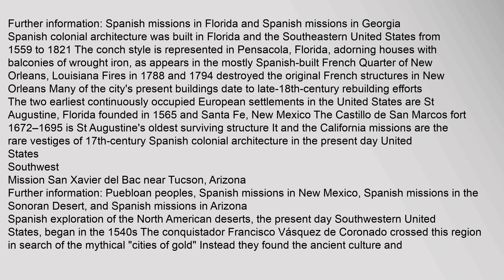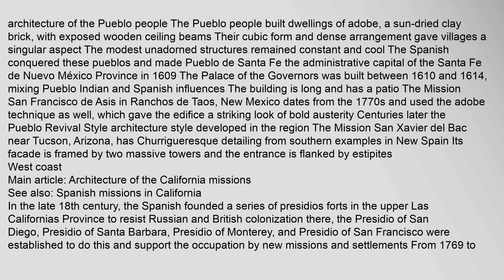Spanish exploration of the North American deserts — the present-day Southwestern United States — began in the 1540s. The conquistador Francisco Vázquez de Coronado crossed this region in search of mythical cities of gold, instead finding the ancient culture and architecture of the Pueblo people. The Pueblo people built dwellings of adobe, a sun-dried clay brick, with exposed wooden ceiling beams. Their cubic form and dense arrangement gave villages a singular aspect. The Spanish conquered these pueblos and made Pueblo de Santa Fe the administrative capital of the Santa Fe de Nuevo Mexico Province. The Palace of the Governors was built between 1610 and 1614, mixing Pueblo Indian and Spanish influences.